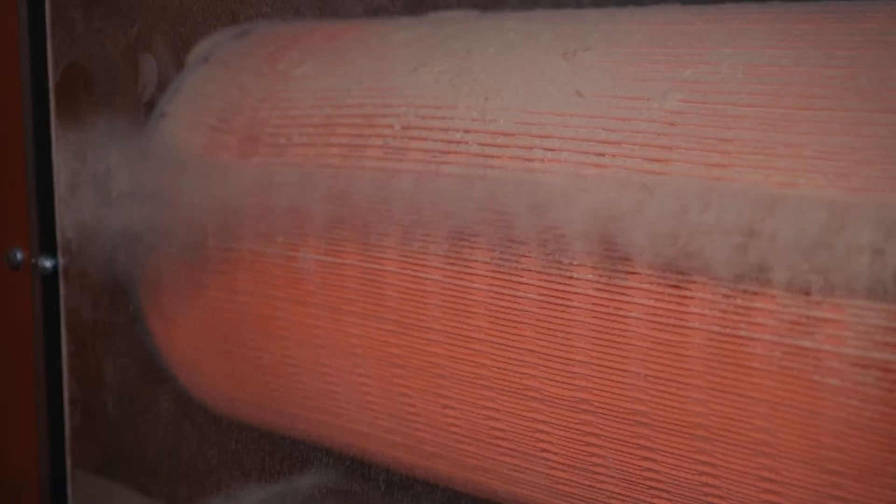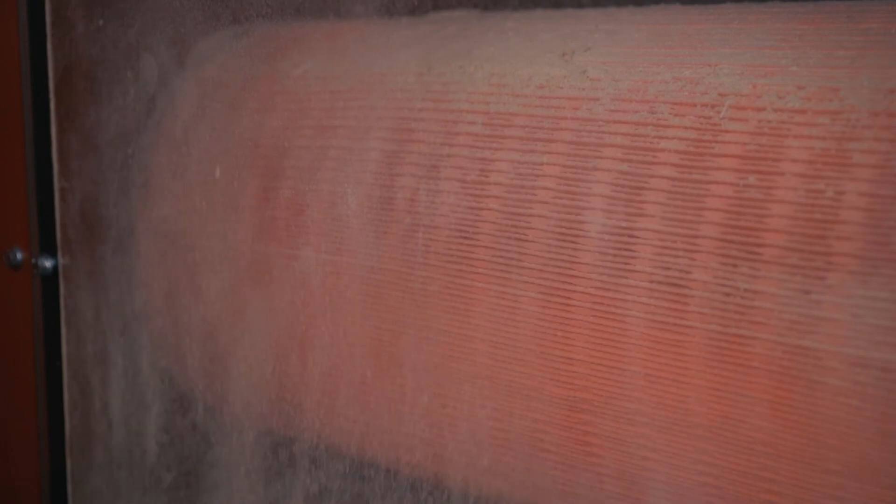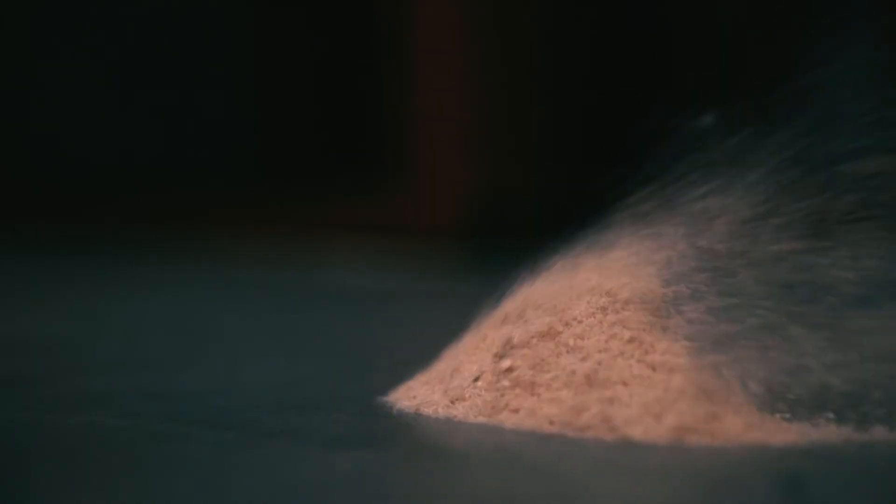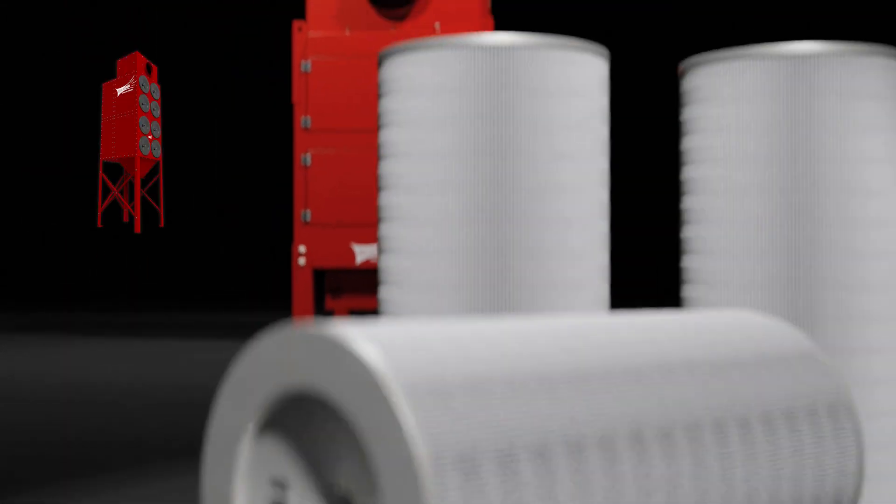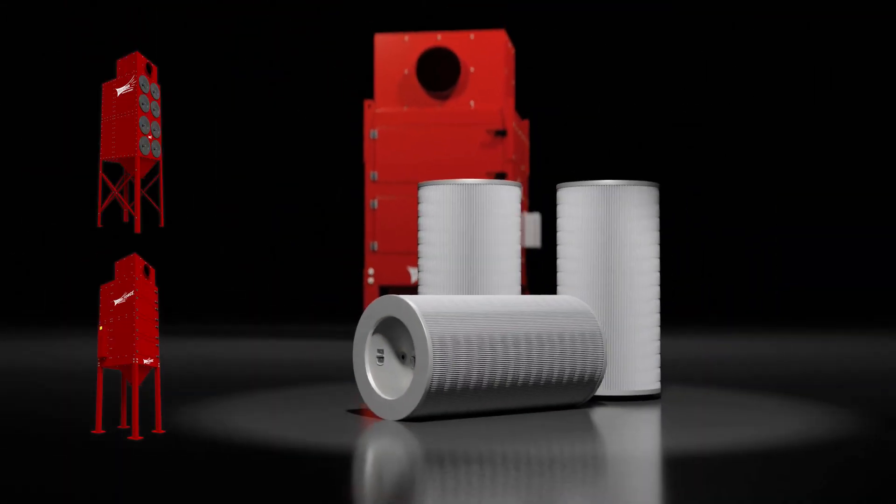Simply put, the Microair Rotopulse filter cleaning system increases filter life and reduces maintenance costs. The Rotopulse filter cleaning system is the heart of the Microair RP and FRP dust collector lines and is the defining advantage in improved performance.